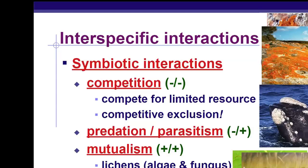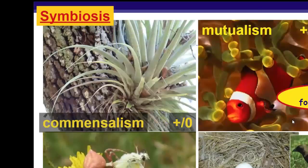And then mutualism — this is just my favorite mutualistic relationship. I love the cattle egrets. They ride around on the backs of cattle and eat the bugs. They're benefiting because they're getting food, and the cattle is also benefiting because it's getting cleaned, if you will. And then commensalism — one benefits but the other one is neither hurt nor harmed. For example, these barnacles are hitching a ride on the whale. The whale is not hurt, not harmed, but the barnacles are benefiting from it.